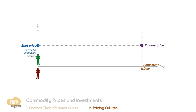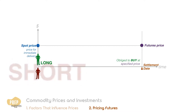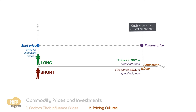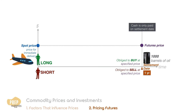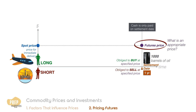To recap, a futures contract for a commodity is an obligation to the long to buy a stated quantity of the commodity at a stated price on a specified date in the future. The short is obliged to sell according to these terms. The cash is only paid on the settlement date. For example, an airline, which is an oil consumer, may want to lock in a price for 1,000 barrels of oil one year from today at a fixed price. An oil producer may want to take the short position to lock in this sale price. How do we determine an appropriate price for this futures contract?